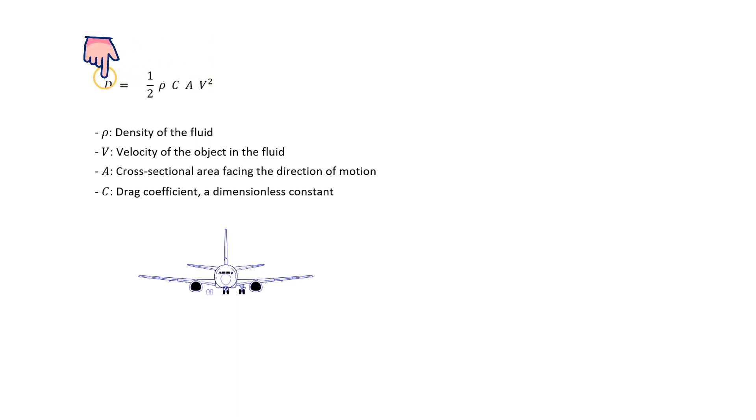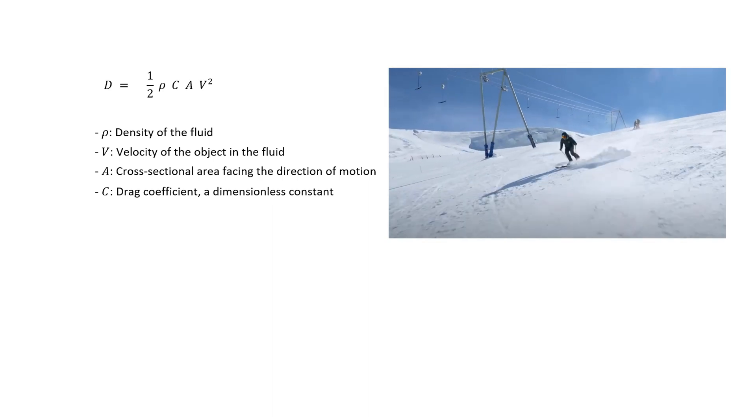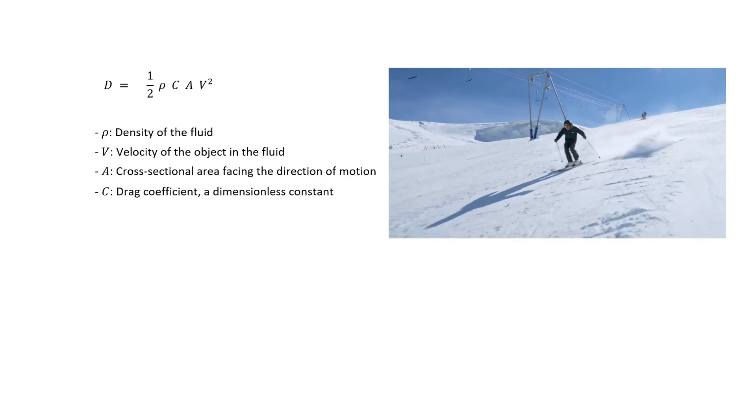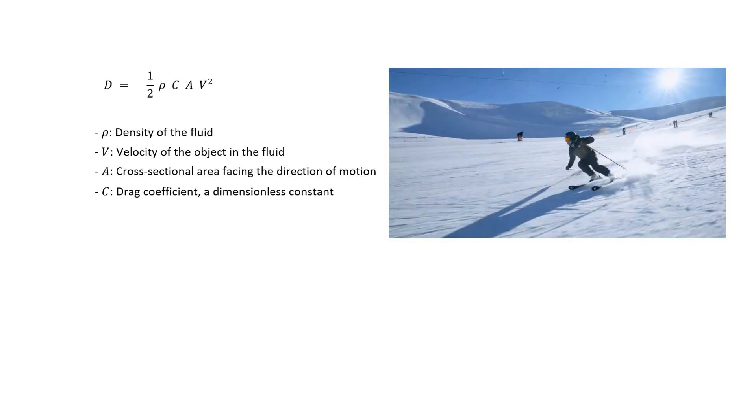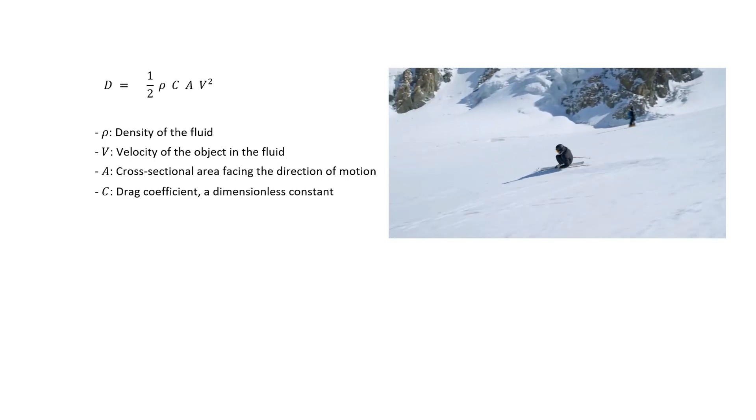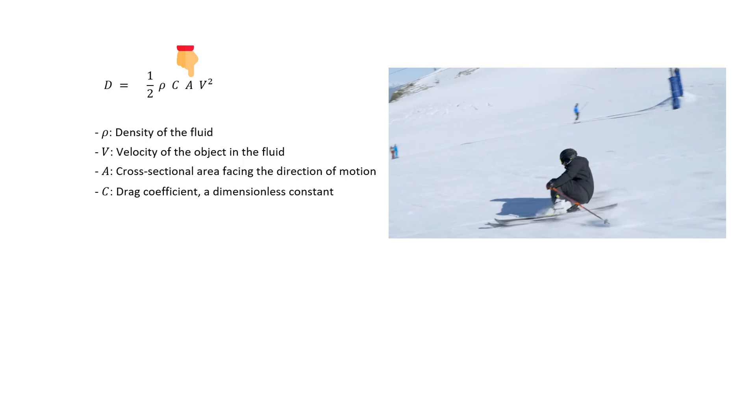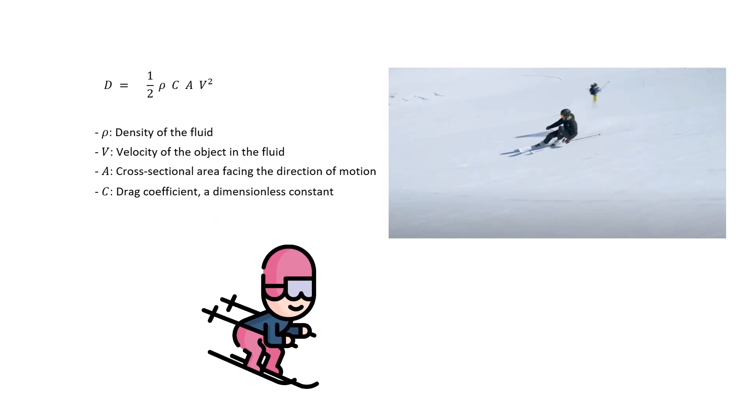So if you see a skier moving at a high velocity, you would see that they try to minimize the drag force to attain higher speed. Although as they attain higher speed, the drag force also increases because of their speed. But what they can control is a cross-sectional area that they try to minimize. So they kind of fold themselves in an egg-like shape to reduce the effective cross-sectional area.